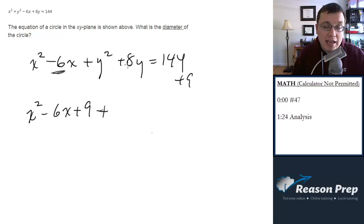And now what about the y? So 8 divided by 2 is 4, 4 squared is 16 so I'm going to add 16 to both sides.